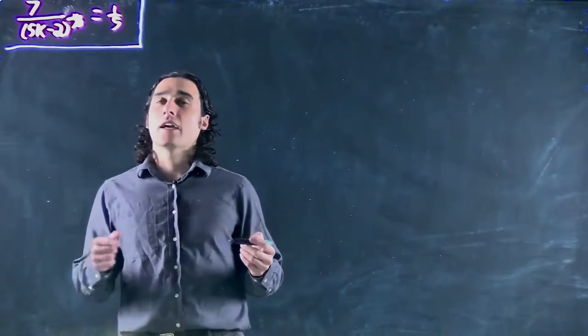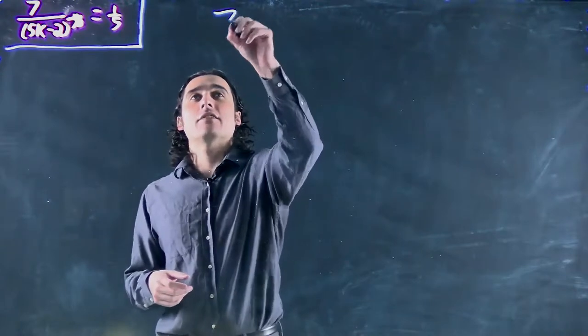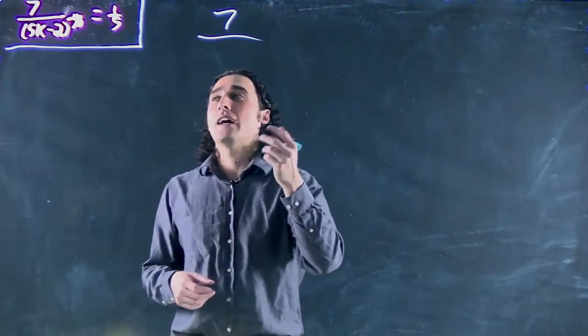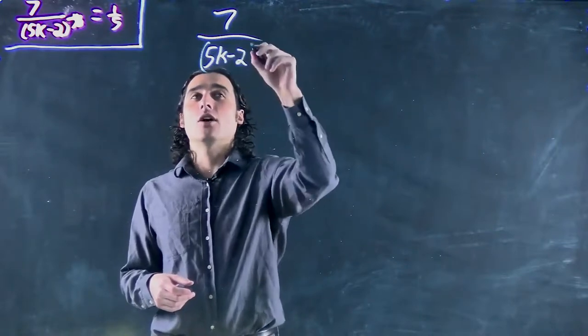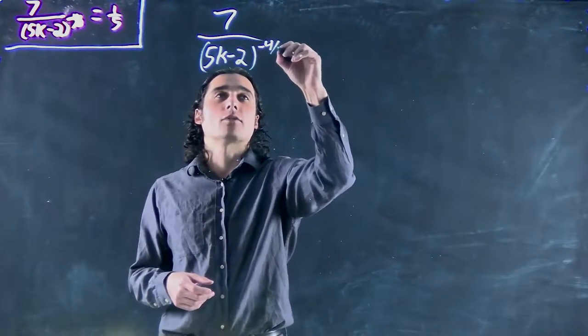Hi again! Still looking at power functions. In this case, we have 7 divided by 5k minus 2 all to the power of minus 4 over 3.